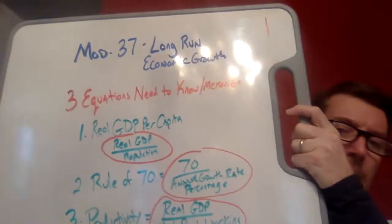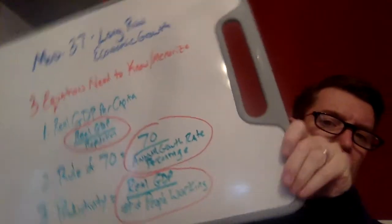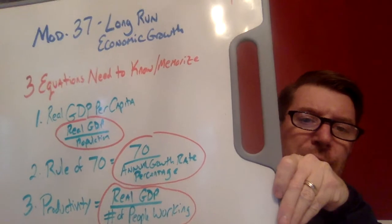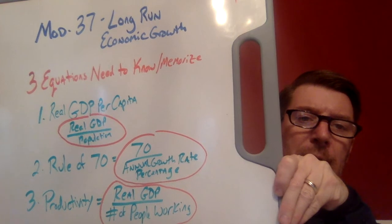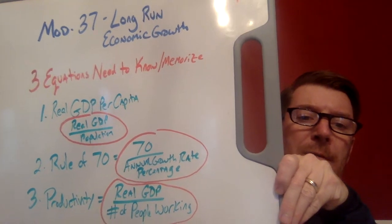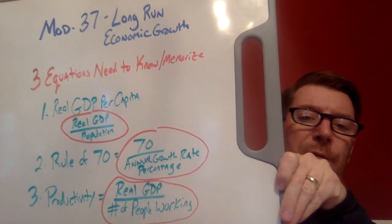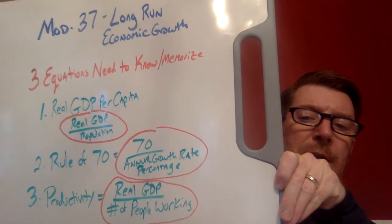Today's mod is mod 37: long-run economic growth. By the end of this mod — these are the hillbilly whiteboards we used in class — there are three calculations we've got to learn: number one, how to calculate real GDP per capita; number two, what is the rule of 70; and number three, how do you calculate productivity.